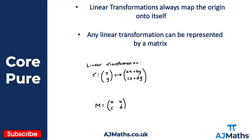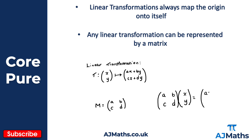We can see why that works: if we take this transformation as a matrix a, b, c, d and multiply it by the general point x, y using matrix multiplication, we get ax plus by in the first row and cx plus dy in the second. And there we have it — that's why the matrix representation works.